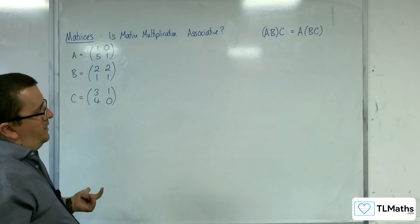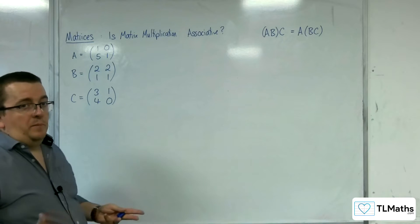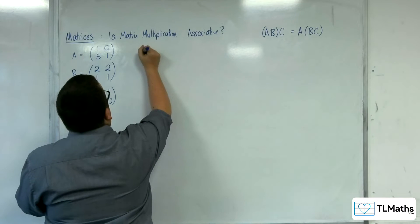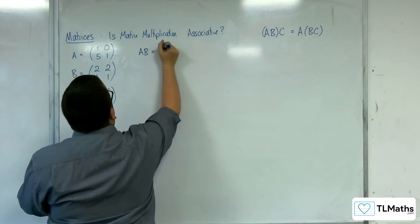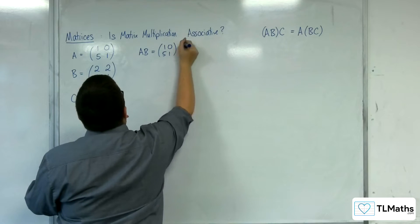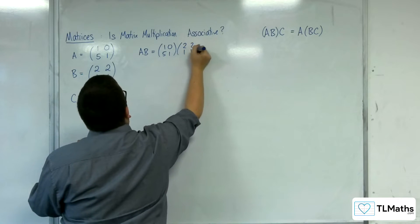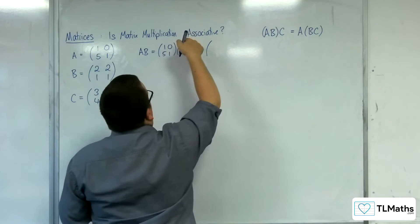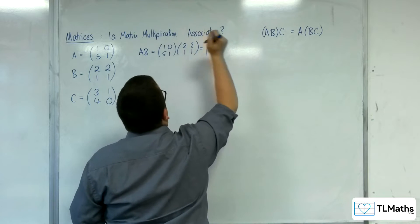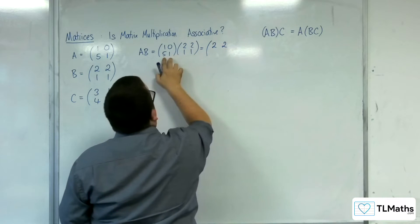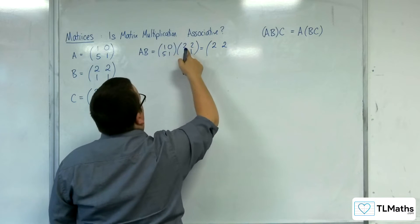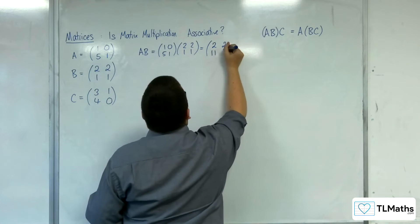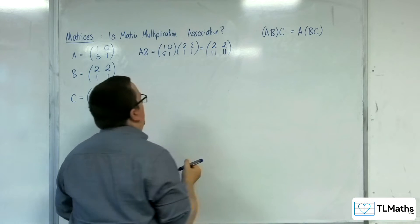So in order to find this, I'm going to need AB and I'm going to need BC. So AB — that is the matrix [1,0;5,1] times [2,2;1,1]. So the top-left entry: 1,0 times the column 2,1 is 2. Top-right: 1,0 times 2,1 is 2. Bottom-left: 5,1 times 2,1 — so 5 lots of 2 is 10, plus 1, so 11. Bottom-right: 5,1 times 2,1 is also 11. So that's AB.